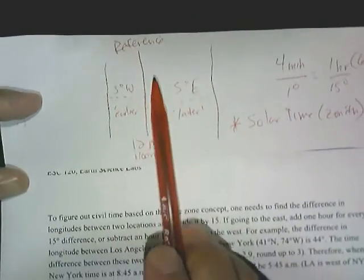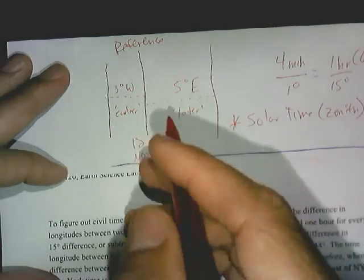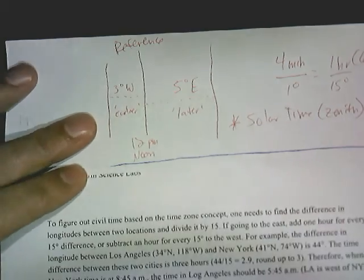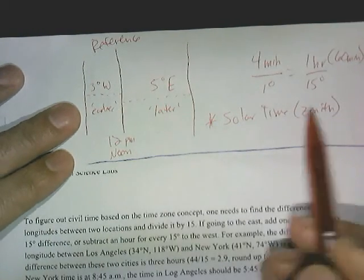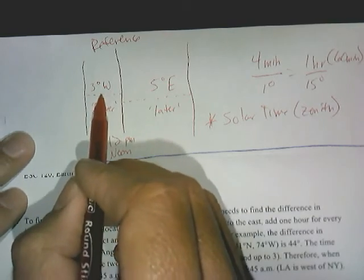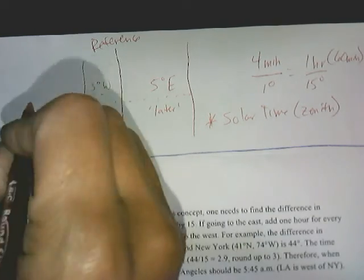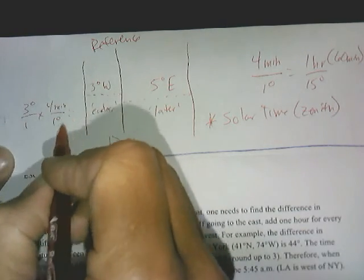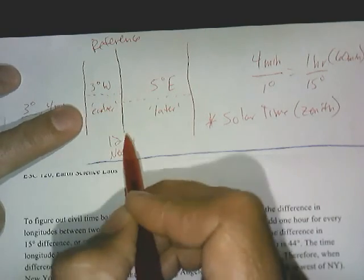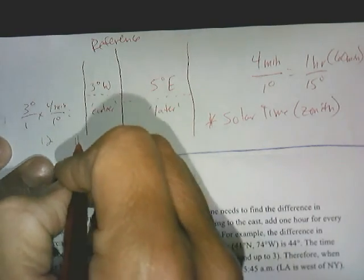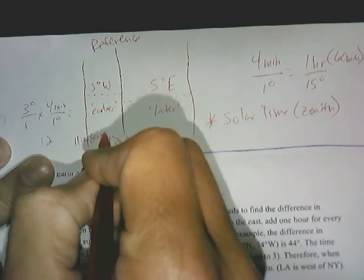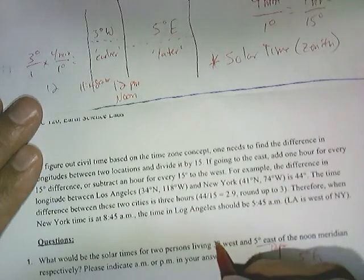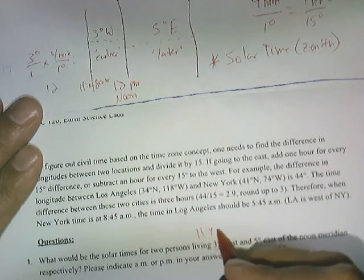Draw your reference line and label it three degrees west. The solar time has not reached the zenith yet, so I can calculate how much time until it does. I know it's four minutes per one degree, so that means it is 12 minutes earlier — 12 minutes before solar noon. So the solar time for three degrees west is going to be 11:48 a.m.